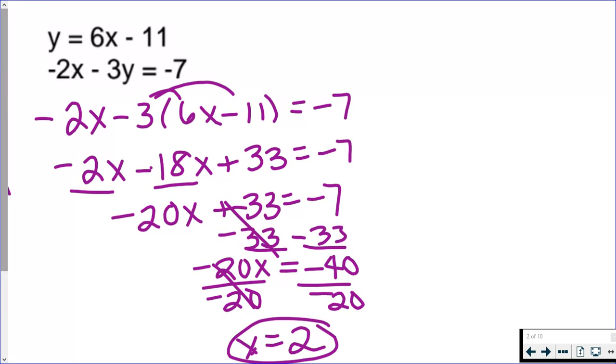Now that I have one of my answers, I have to find the other. You can go back and use whichever equation you want from the system and replace your x with 2, leaving you with y. So I'm going to use the first equation. That one looks a little simpler than the second equation. So instead of 6x minus 11, I'm going to write 6 times 2 minus 11.